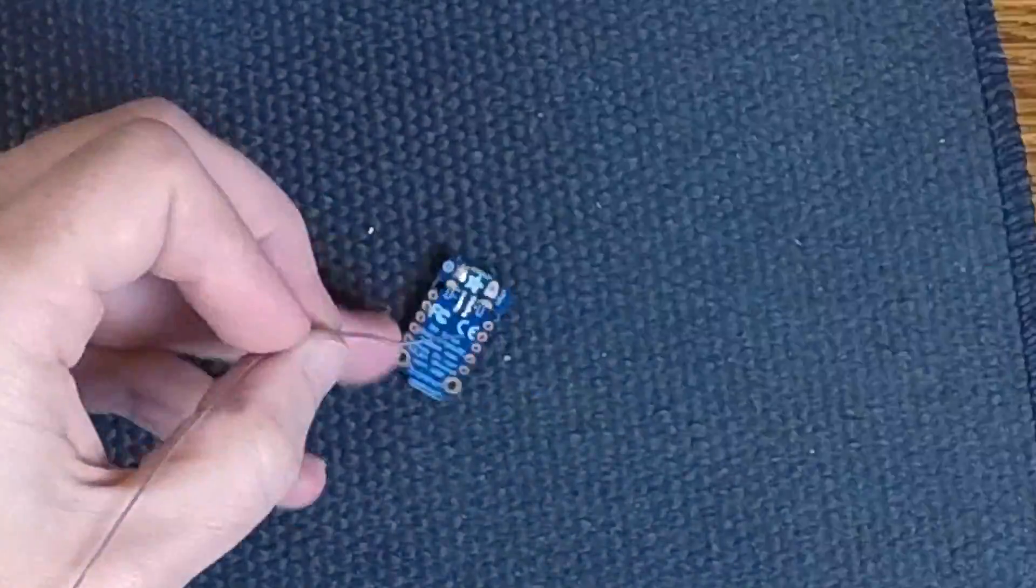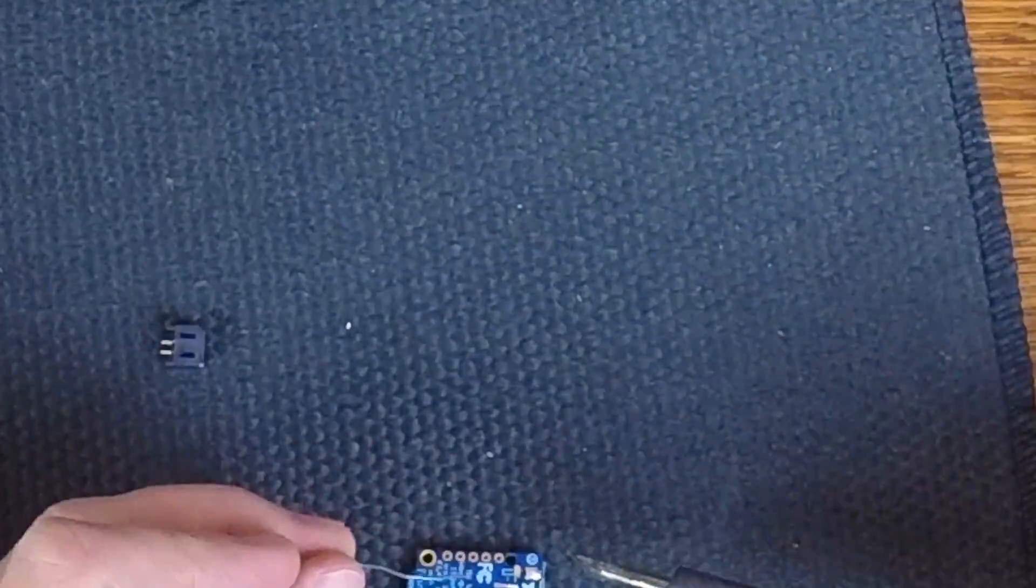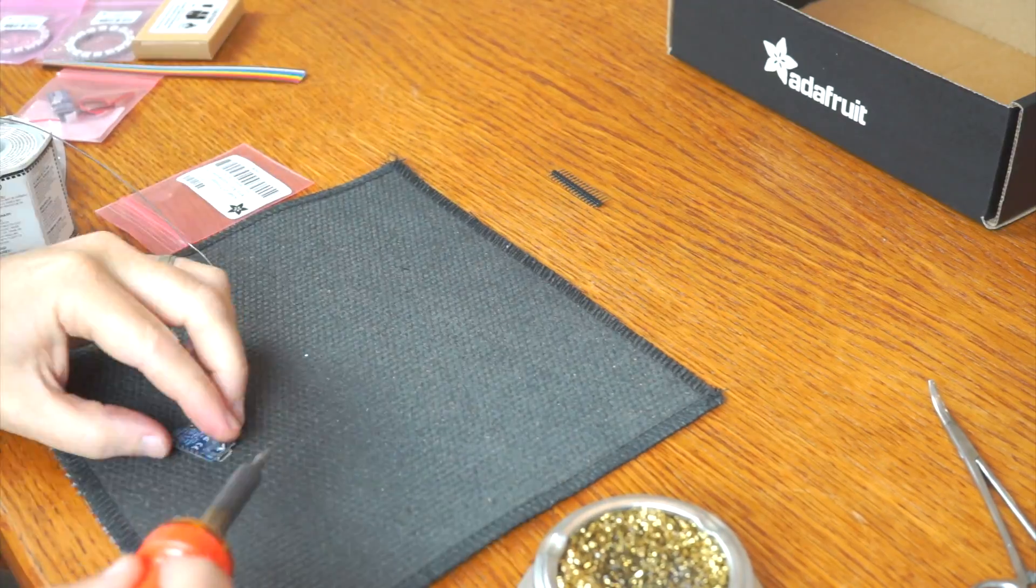You're going to do a surface mount solder to get the JST connector onto the board, which can be a curveball if you're new to soldering or a beginner. Surface mount soldering can be a little bit tricky.